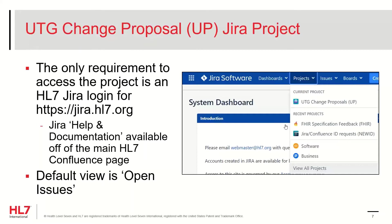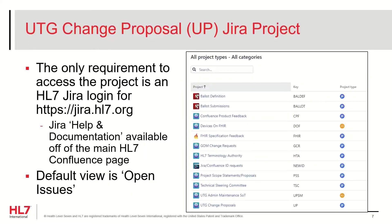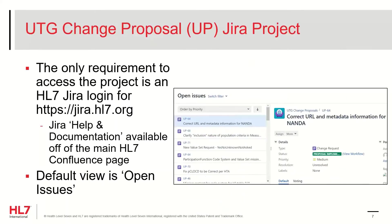To navigate to the UTG tickets, log into the HL7 JIRA page at jira.hl7.org. Click on Projects in the top bar and pick the UP project. If you do not see it, then select View All Projects and pick the UP UTG Change Proposal project. Clicking on the project name will bring you to a page that by default lists all open issues.